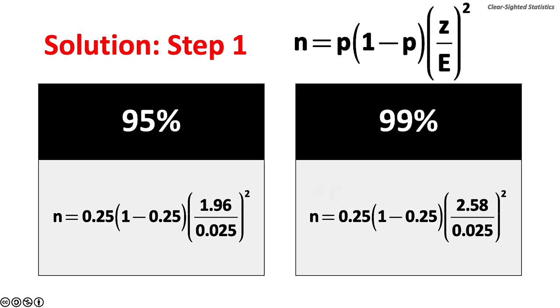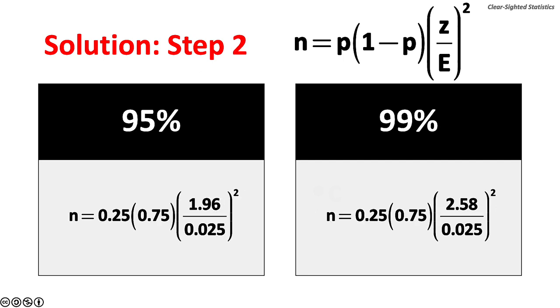Step 1. Enter the data into the formula. The z value for a 95% confidence level is 1.96. The z value for a 99% confidence level is 2.58. Step 2. Find 1 minus P. 1 minus 0.25 equals 0.75.